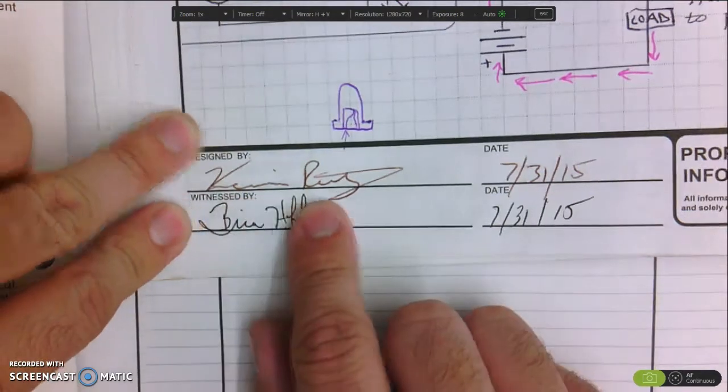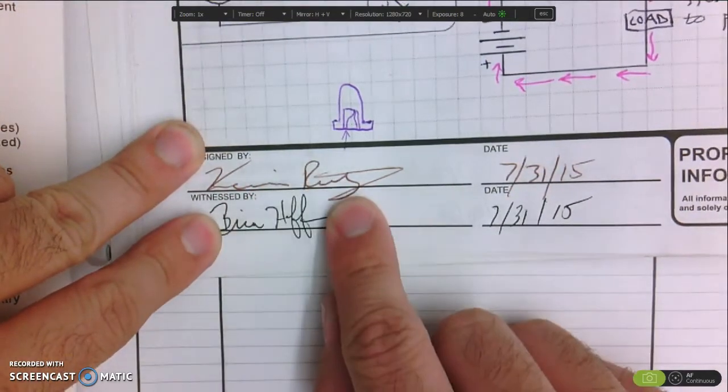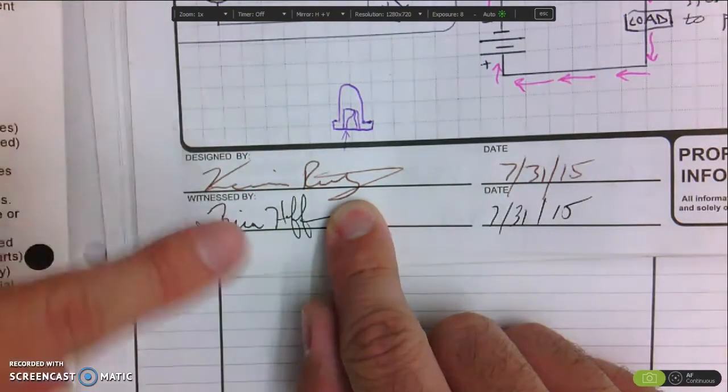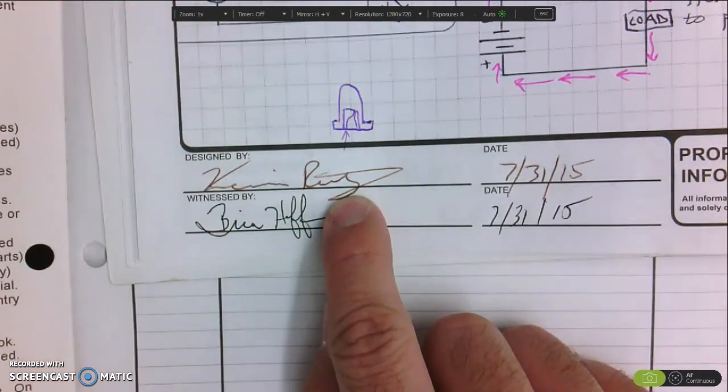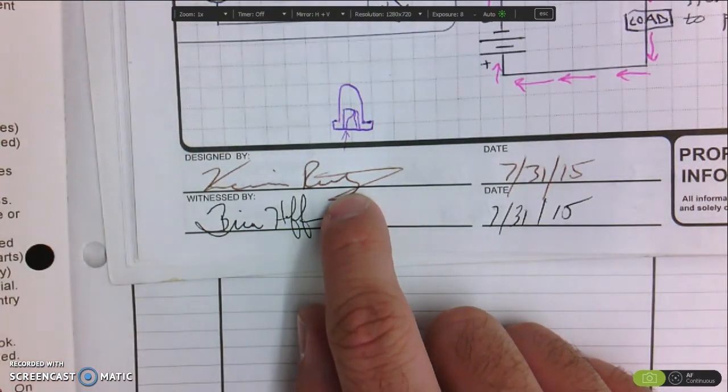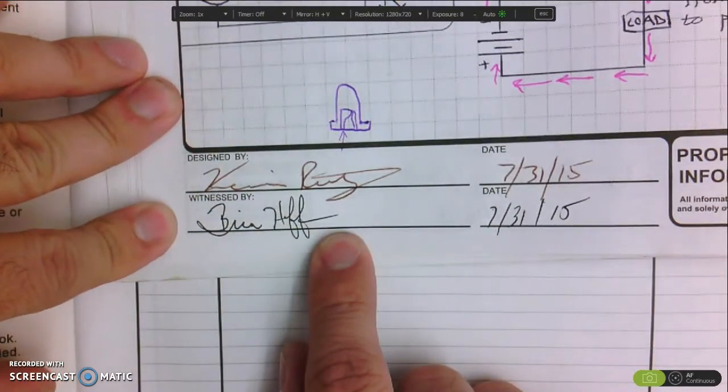If that's the case you can't be the only person to say oh yeah I totally did this because then it's just what you said versus what somebody else said. So that's why they have this section called witnessed by.